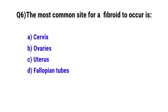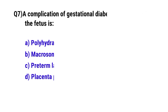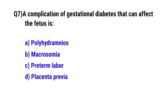Question number six: The most common site for a fibroid to occur. The correct option is C, uterus.